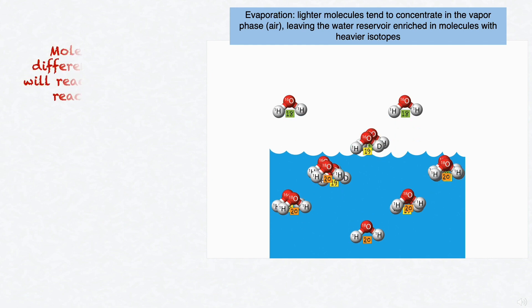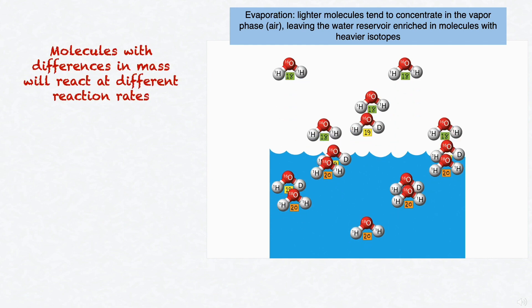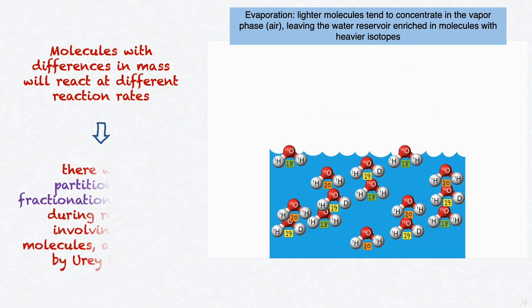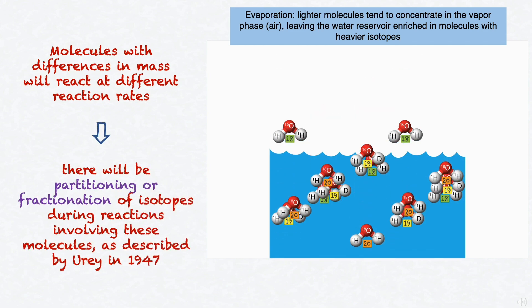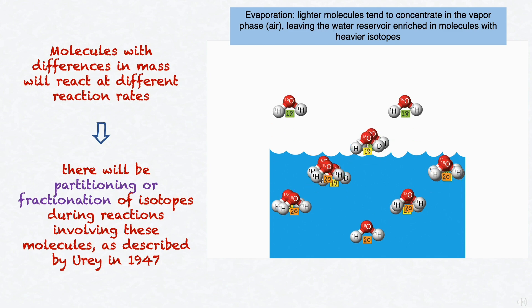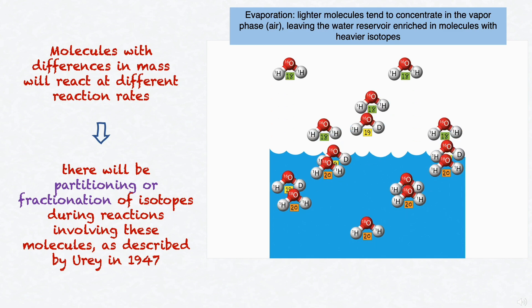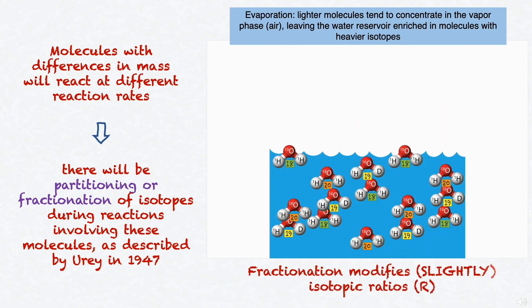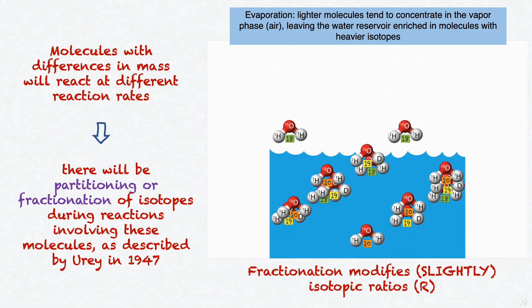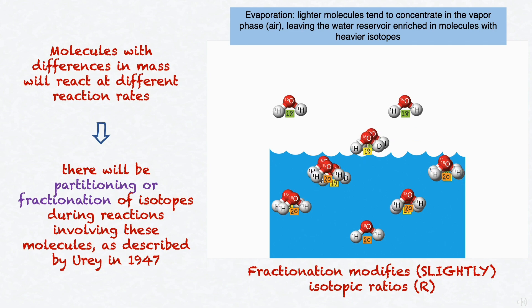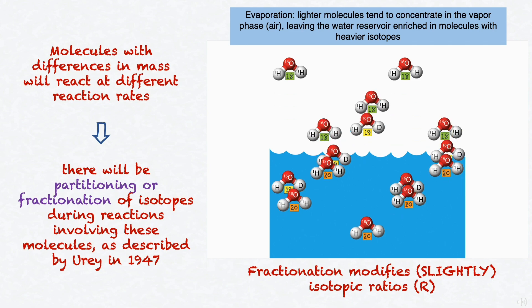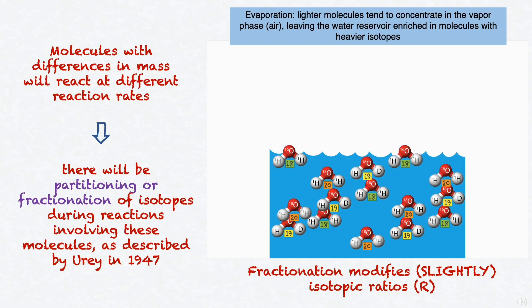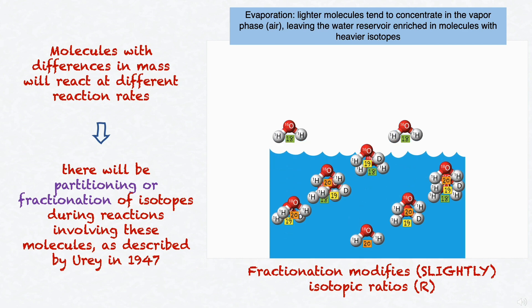Molecules with differences in mass will react at different reaction rates. This means that there will be partitioning or fractionation of isotopes during reactions involving these molecules, as described by Urey in 1947. Fractionation of isotopes will modify these ratios slightly for any given compound containing the stable isotopes. And by slightly, I mean that variations are seen only at the fifth or sixth decimal place.